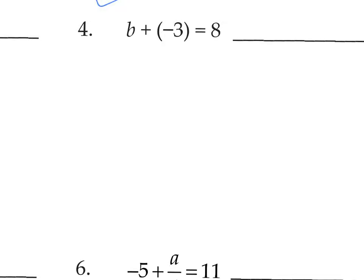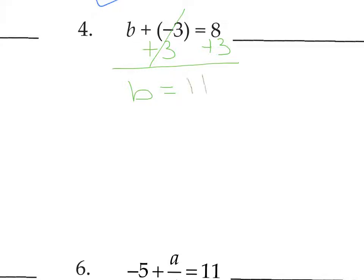Number 4: isolate the variable, which is b. We have a negative 3 being added to b. To get rid of negative 3, we add 3. Positive 3 and negative 3 are opposites, so we get b equals 11.